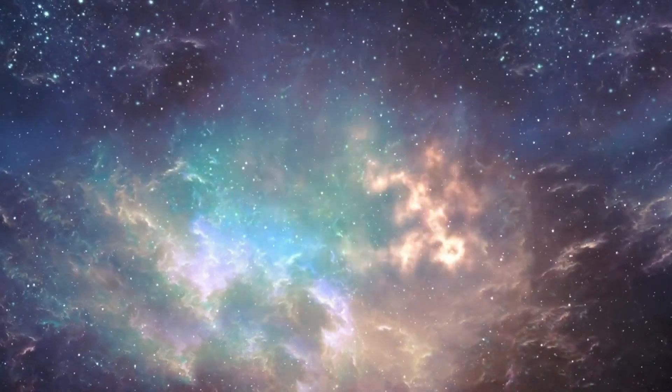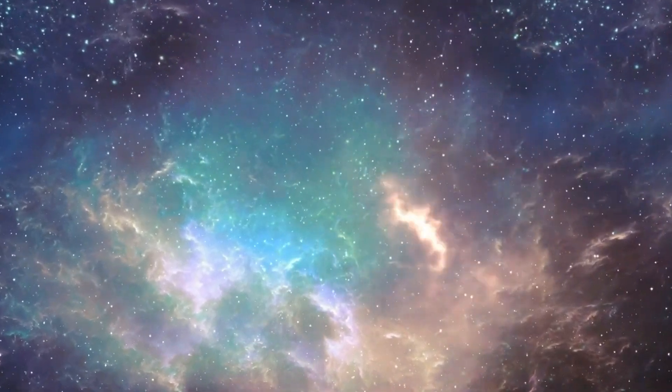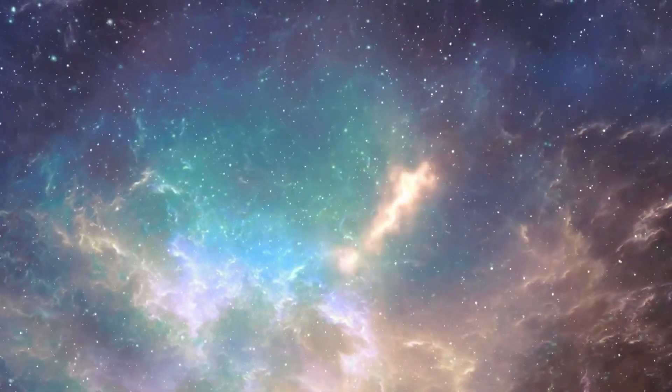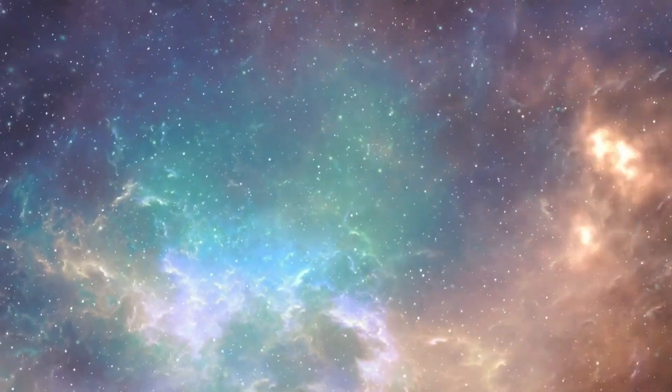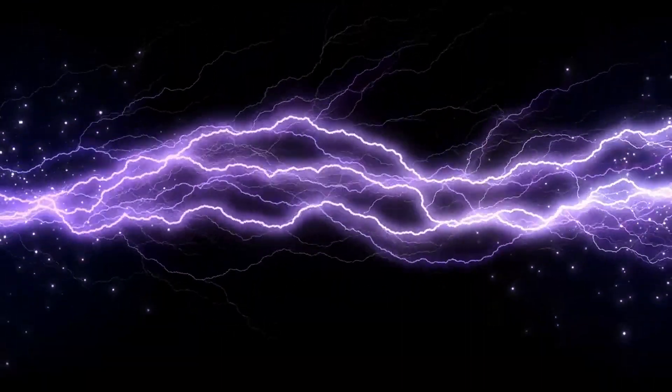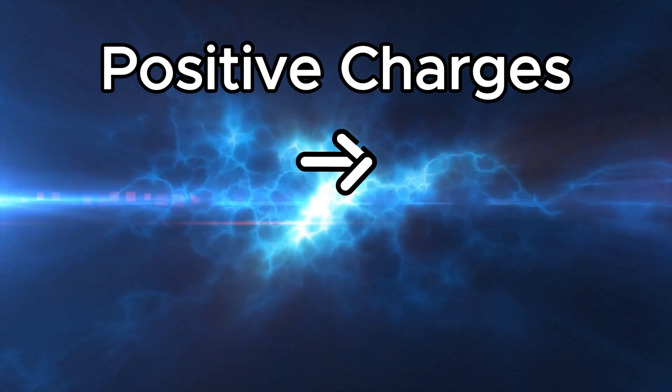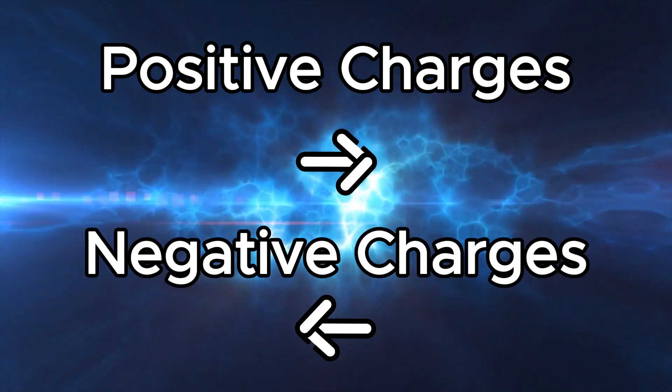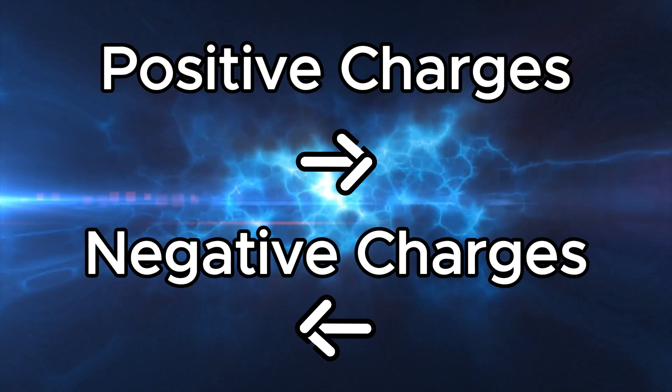Now that we know what plasma is, the next question is how does it move? And why does it form such strange, beautiful shapes in space? The answer lies in how charged particles respond to electric and magnetic fields. Let's start with electric fields. These are invisible forces that push charges. In an electric field, positively charged ions move one way, and negatively charged electrons move the other. That movement creates an electric current.